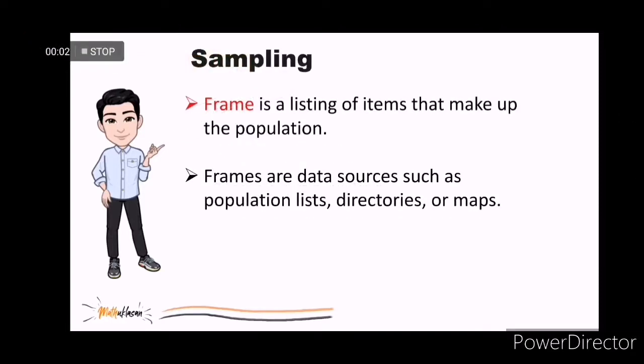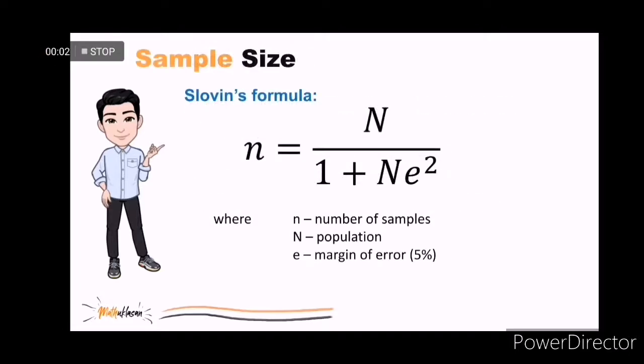The sampling process begins by defining the frame, a listing of items that make up the population. Frames are data sources such as population lists, directories, or maps. But how do we determine the sample size if you know the entire number of your population? One of the ways is applying the Slovene's formula. In the formula, small n refers to the number of samples, capital N refers to the population, and small e refers to the margin of error, which is usually 5%. Others use 1% and 10%.